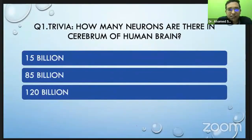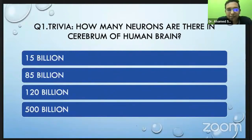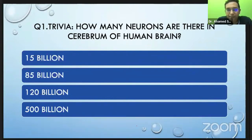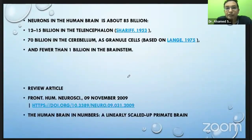How many neurons are there in the cerebrum of the human brain? This is a tricky, mind-bending question. With this I wanted to introduce you to the intricacies of the brain and how it functions. You know that in stroke, about 1.2 million neurons — not billion — 1.2 million neurons are actually getting damaged each minute. The number of neurons in the human brain amounts to about 85 billion, of which about 15 billion are in the cerebrum and about 70 billion are in the cerebellum. So the cerebellum has about five times more neurons than the cerebrum, that is the telencephalon.